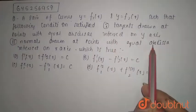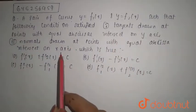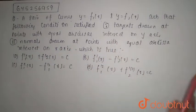Second, normal drawn at points with equal abscissa intersect on x-axis. So, which is true?